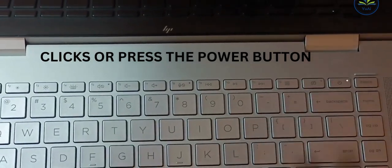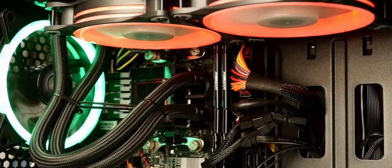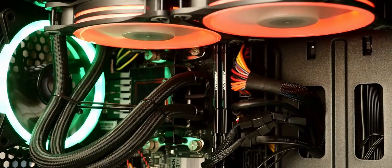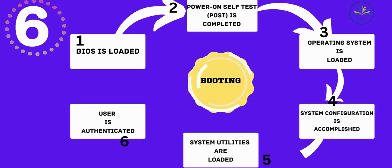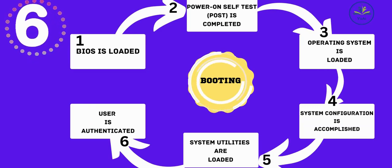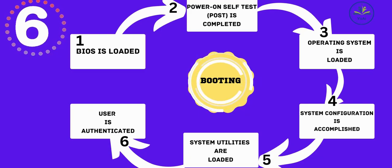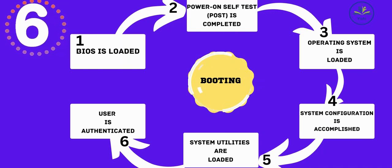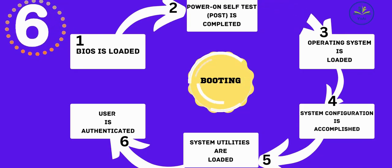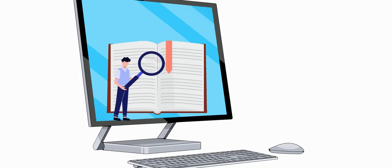Whenever the user presses the power button, all the devices connected to our system receive power and are initialized. After that, the computer system goes through six steps of the booting process: Step 1 — loading of BIOS; Step 2 — BIOS performs the POST operation; Step 3 — the operating system is loaded into computer's memory; Step 4 — system configuration is accomplished; Step 5 — system utilities are loaded; and Step 6 — user is authenticated.